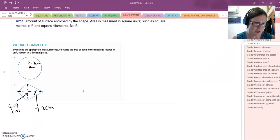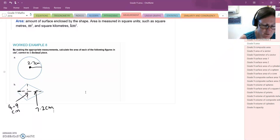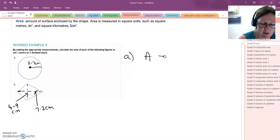Worked example 8 just has two shapes. First shape is a circle. So we need to find the formula for the area of a circle. And the formula for the area of a circle is area equals pi r squared.